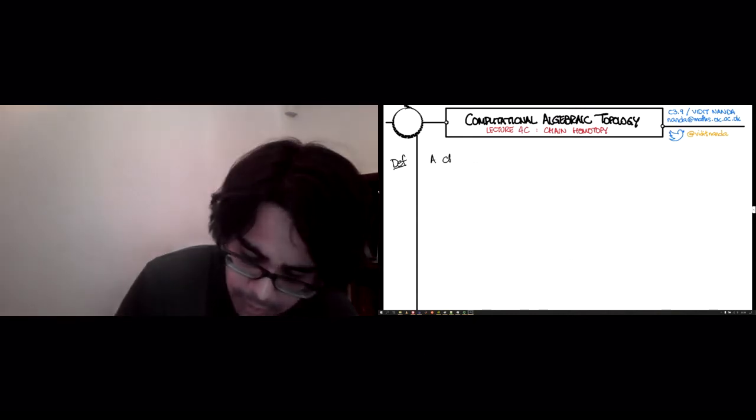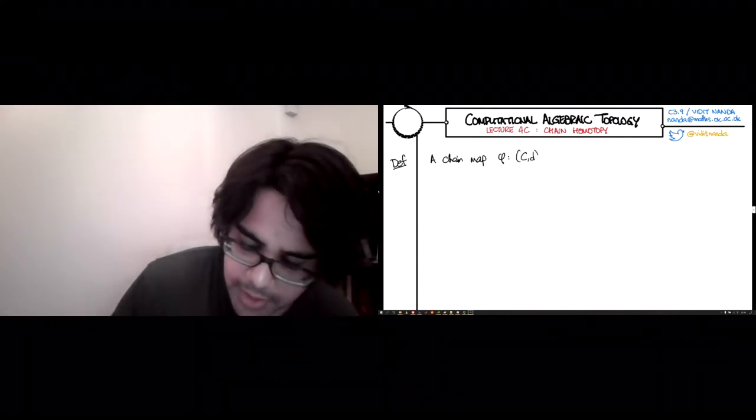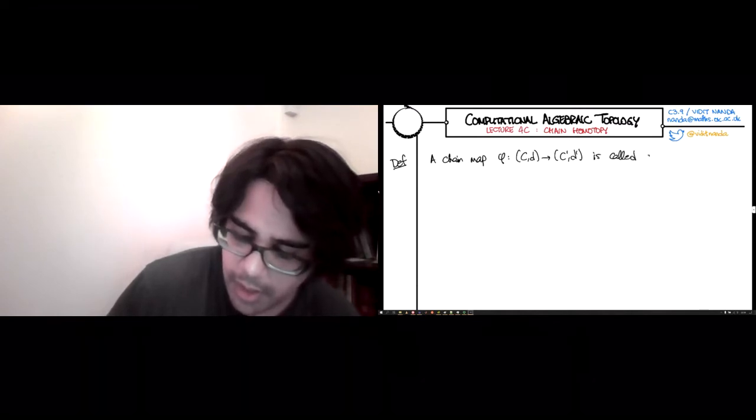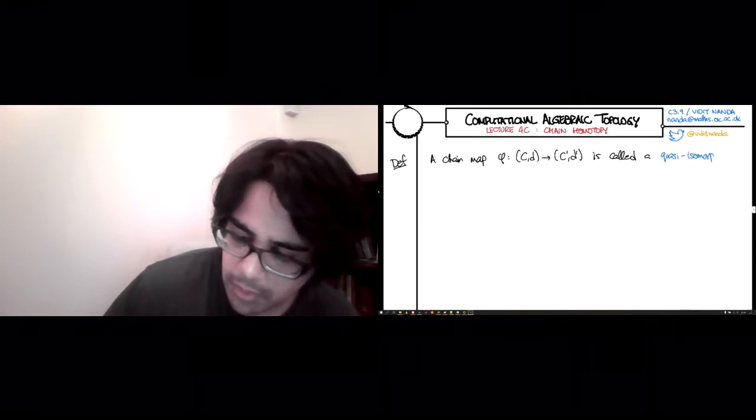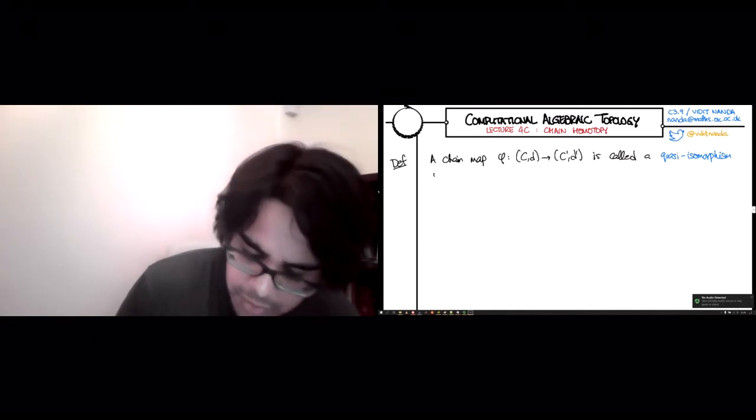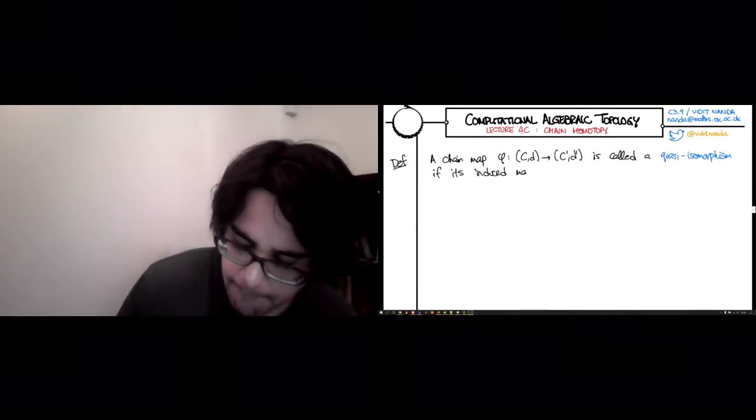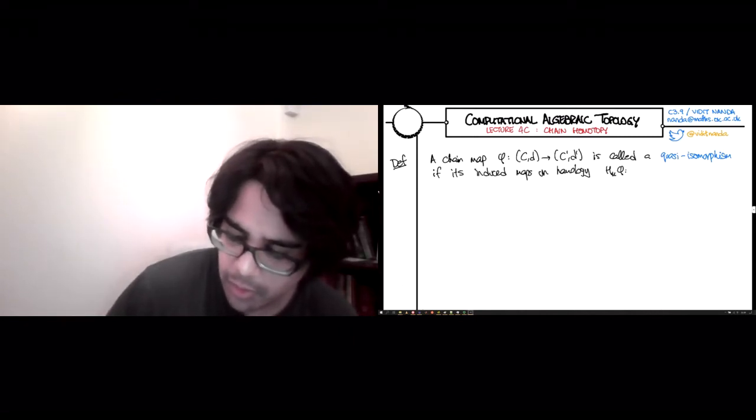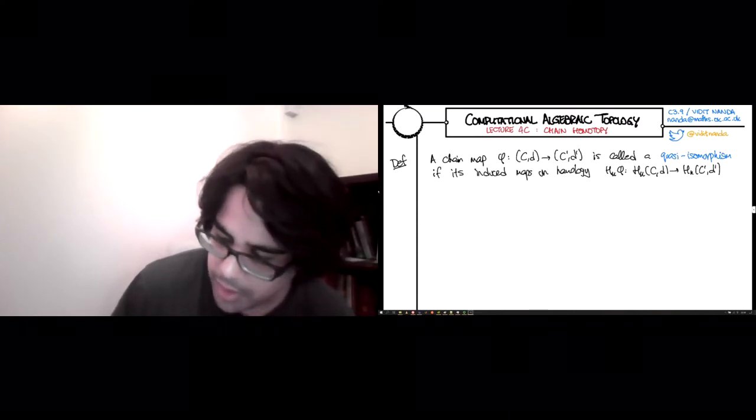A chain map, let's call it phi, that goes from a chain complex (C,D) to a chain complex (C',D'), is called a quasi-isomorphism if they induce maps on homology—I guess we call them H_K(phi)—they go from the homology of C to the homology of C'. These are all isomorphisms.